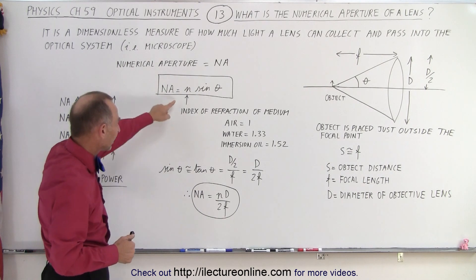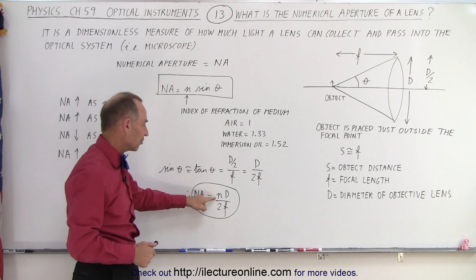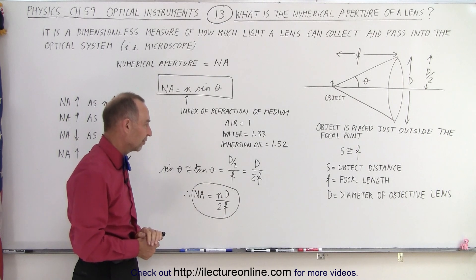Now if we're going to rewrite this equation like this, notice it's going to be the index of refraction times the diameter of the lens, divided by twice the focal length of the lens.